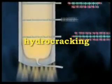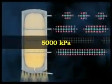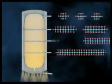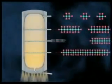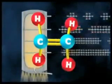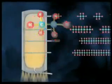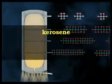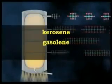In hydrocracking, crude oil is heated at very high pressure, usually around 5000 kilopascals, in the presence of hydrogen with a metallic catalyst such as platinum, nickel or palladium. This process tends to produce saturated hydrocarbons such as shorter carbon chain alkanes, because it adds a hydrogen atom to alkenes and aromatic hydrocarbons. It is a major source of kerosene jet fuel, gasoline components and LPG.